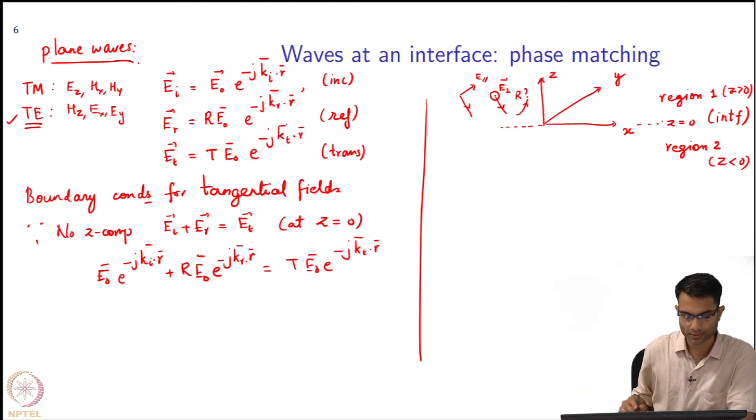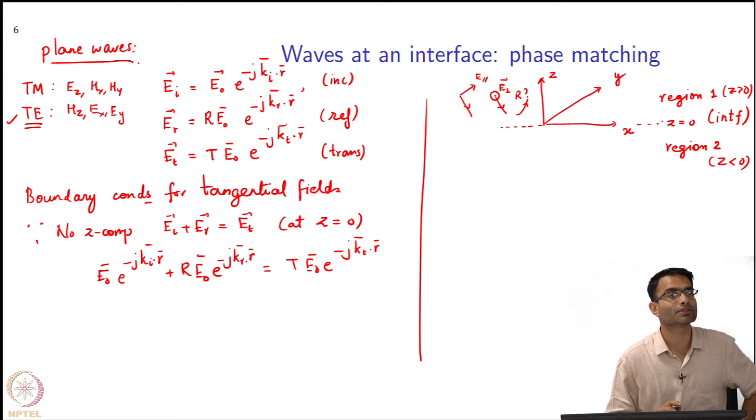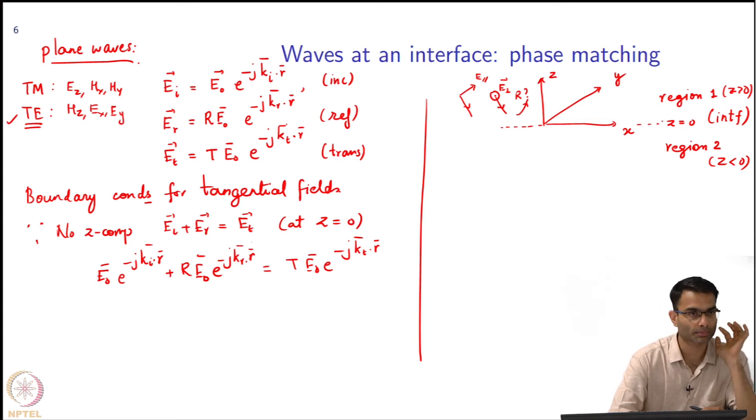I am going to substitute these expressions inside. Region 1 is defined by z greater than 0, region 2 by z less than 0. I can cancel out E naught from both sides. What other simplifications can I make? This interface is happening at z equals 0. So k dot r will only have kx times x plus ky times y - the z equals 0 term is gone. So I cannot actually say anything about the z components. What about the x and y components?